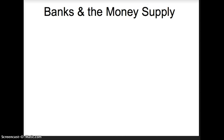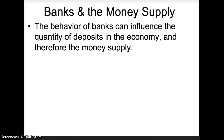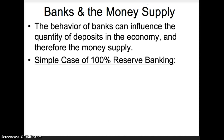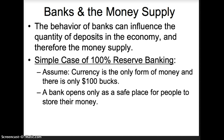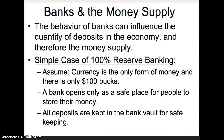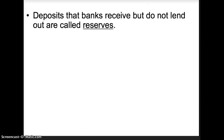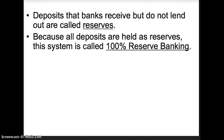Let's turn our attention to banks. The behavior of banks can influence the quantity of deposits in the economy and therefore the money supply. Let's start with the simple case of 100% reserve banking to get familiar with the vocabulary, then we'll move on to the more realistic example. Let's assume that currency is the only form of money and there's $100 — not very realistic, but it keeps our math simple. A bank opens only as a safe place for people to store their money, and all deposits are kept in the bank vault. Deposits that banks receive but do not lend out are called reserves, and because all deposits are held as reserves, this system is called 100% reserve banking.